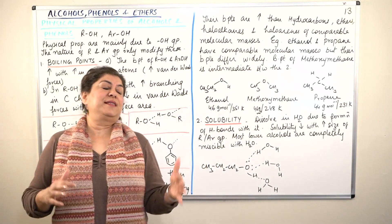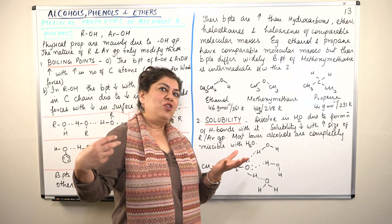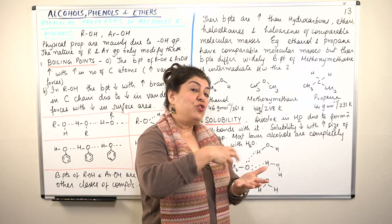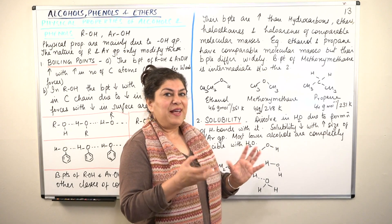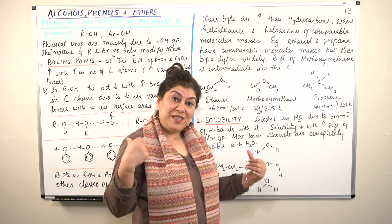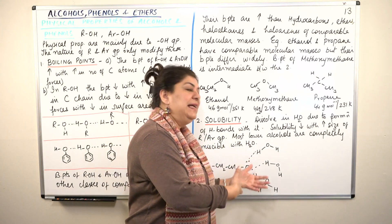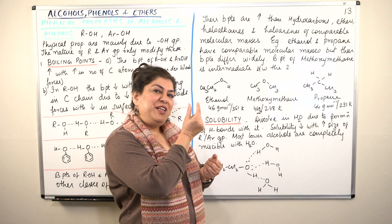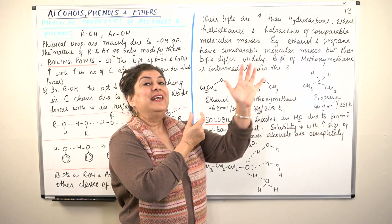The second physical property affected is solubility in water. Water is polar and dissolves polar solutes. The presence of the OH group lends polarity to alcohols and phenols. Pure hydrocarbons will not have that kind of polarity, so they will be insoluble in water. But the polarity rendered by the OH group makes alcohols and phenols soluble in water. However, solubility also depends on the rest of the molecule — as the alkyl or aryl part becomes bigger, that part starts dominating and solubility decreases.